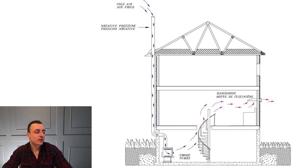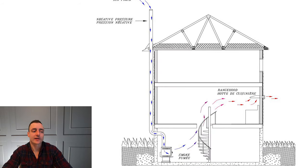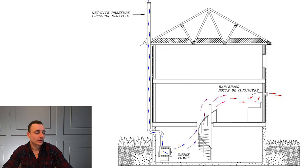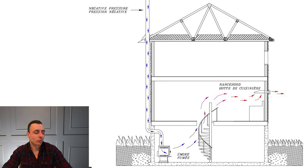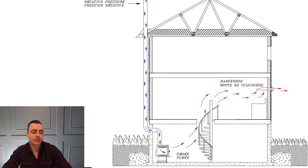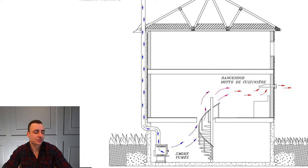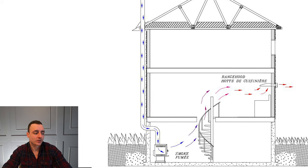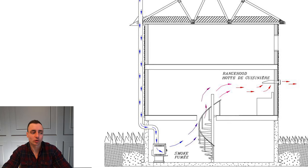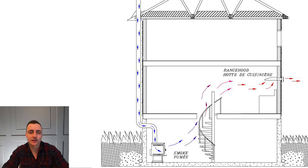Our third scenario shows the effect of negative pressure caused by an air-moving device inside the house. In this example, we see a range hood drawing air from the inside of the house, which is then replaced by air coming down from the chimney. The result is a smoking problem — that range hood is effectively sucking air out and reversing the chimney flow.